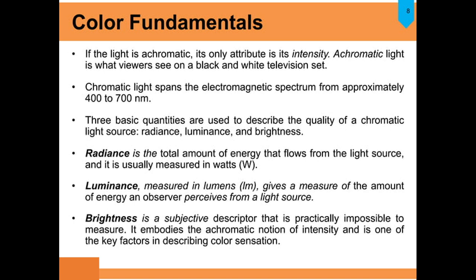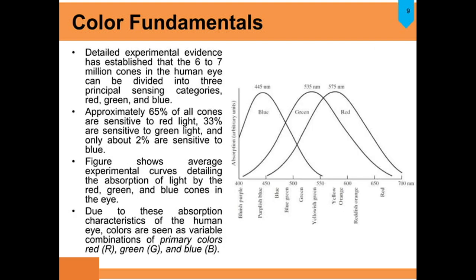What is brightness? It is a subjective descriptor that is practically impossible to measure. It embodies an achromatic notion of intensity and is one of the key factors in describing the color sensation. It is a subjective descriptor meaning it depends upon the human eye — only with bright light can we see clearly. Under moonlight it is not very clear. The human eye is the subject here — brightness is a subjective descriptor.